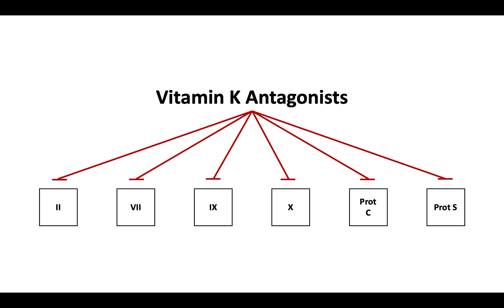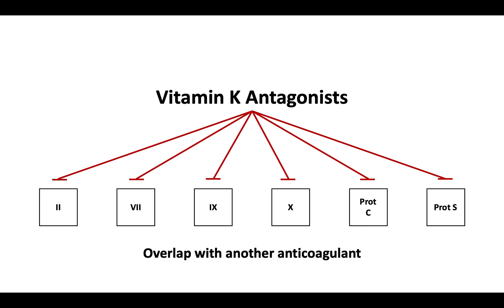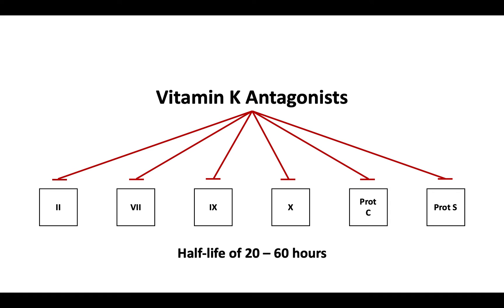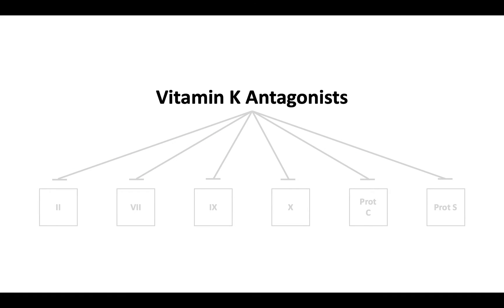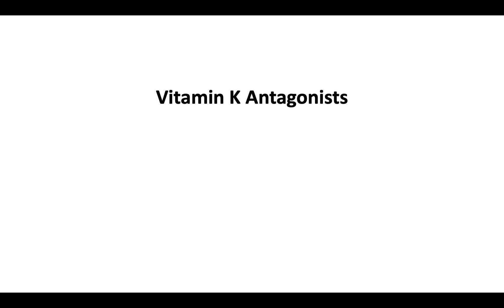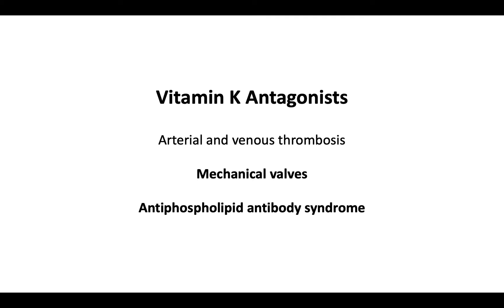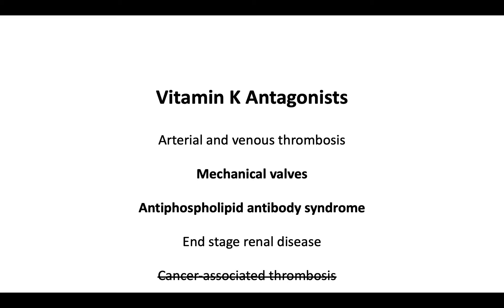The attainment of therapeutic anticoagulation takes about 5 days. For this reason, vitamin K antagonists must initially overlap with another anticoagulant, such as heparin. Vitamin K antagonists have a half-life of about 20 to 60 hours. They are indicated in the treatment of arterial and venous thrombosis, anticoagulation of mechanical valves, in the antiphospholipid antibody syndrome, and end-stage renal disease. They are not the anticoagulant of choice for cancer-associated thrombosis.